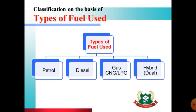Now let's classify engines on the basis of fuel used. There are four common types. The most common fuel is petrol — engines that work on petrol are known as petrol engines and are used in light motor vehicles like cars and two-wheelers. Heavy vehicles use diesel as a fuel, and those engines are called diesel engines.